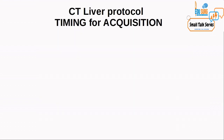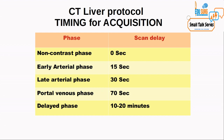For CT liver protocol, the timing for acquisition is different from that of CT pancreas protocol. The phases are: a non-contrast or pre-contrast phase at 0 seconds, followed by early arterial phase at 15 seconds from injection, late arterial phase at around 30 seconds, portal venous phase at 70 seconds, and especially in liver protocol, a delayed phase taken at 5, 10, 15, or 20 minutes. This delayed phase is predominantly for picking up lesions like cholangiocarcinoma, which pick up contrast very late.